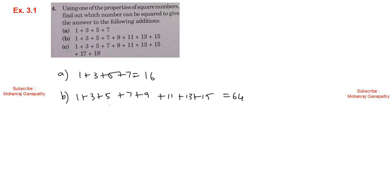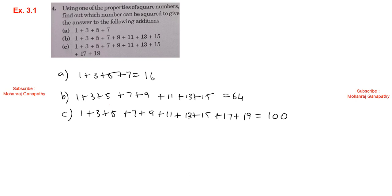Checking: 1+3+5+7+9+11+13+15 = 64 (8 squared). Then 64 plus 17 equals 81 (9 squared). 81 plus 19 equals 100 (10 squared). So the pattern holds: n squared equals the sum of the first n consecutive odd numbers.